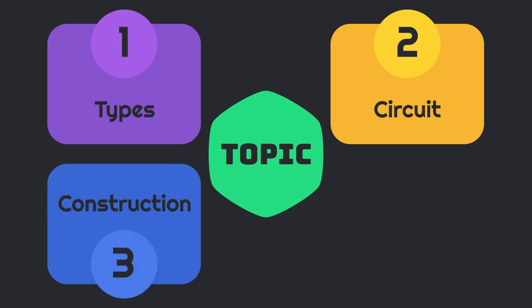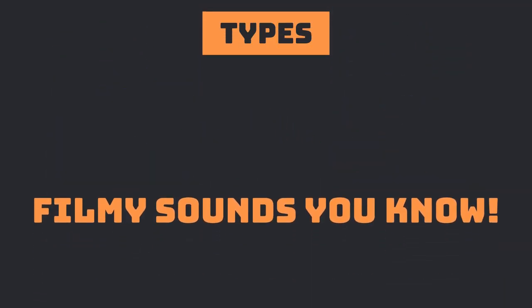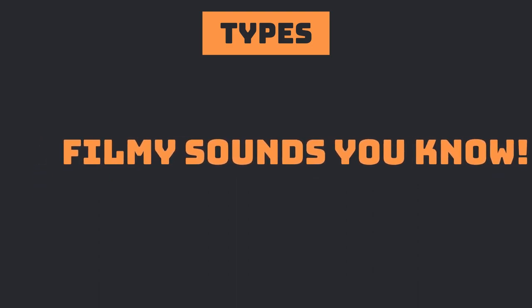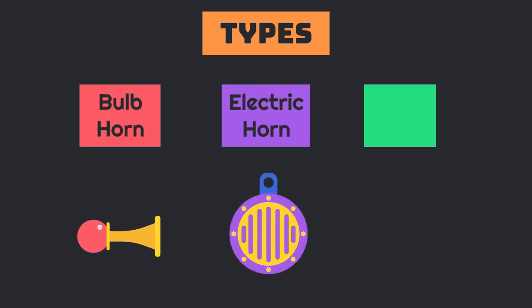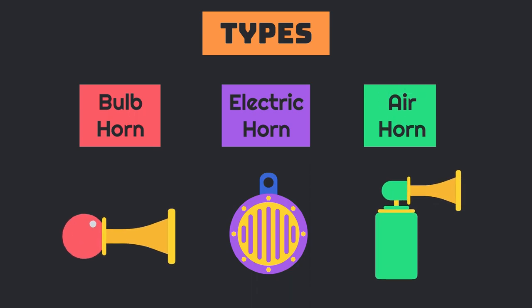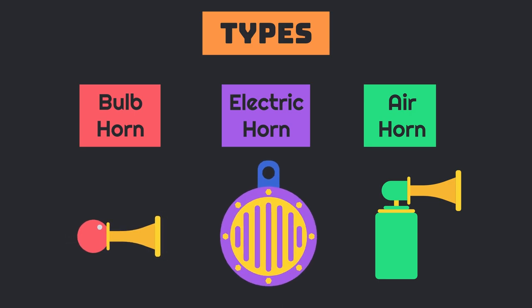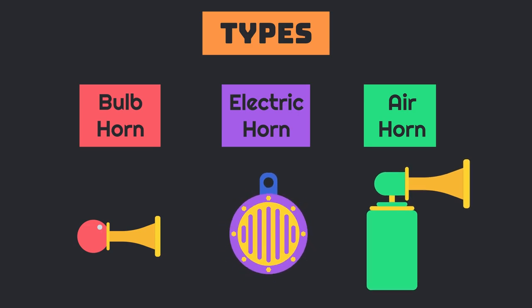There are many types of horns available in the market, but we can divide them into three main categories according to their construction. The first one is bulb horn, second is electric horn, and last one is air horn. Bulb horn is used in auto rickshaws as well as classic cars. Electric horn is popular in modern automobiles, while air horn is provided in heavy vehicles such as trucks and trailers.